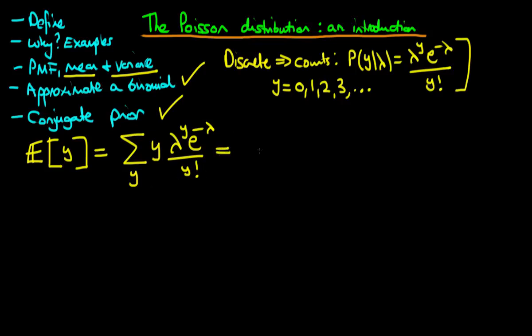We can take e to the power minus lambda outside the summation since it contains no y. The first term when y equals 0 contributes nothing, as it is 0 times something positive. When y equals 1, the numerator gives lambda divided by 1 factorial, which is just 1, so we simply get lambda.